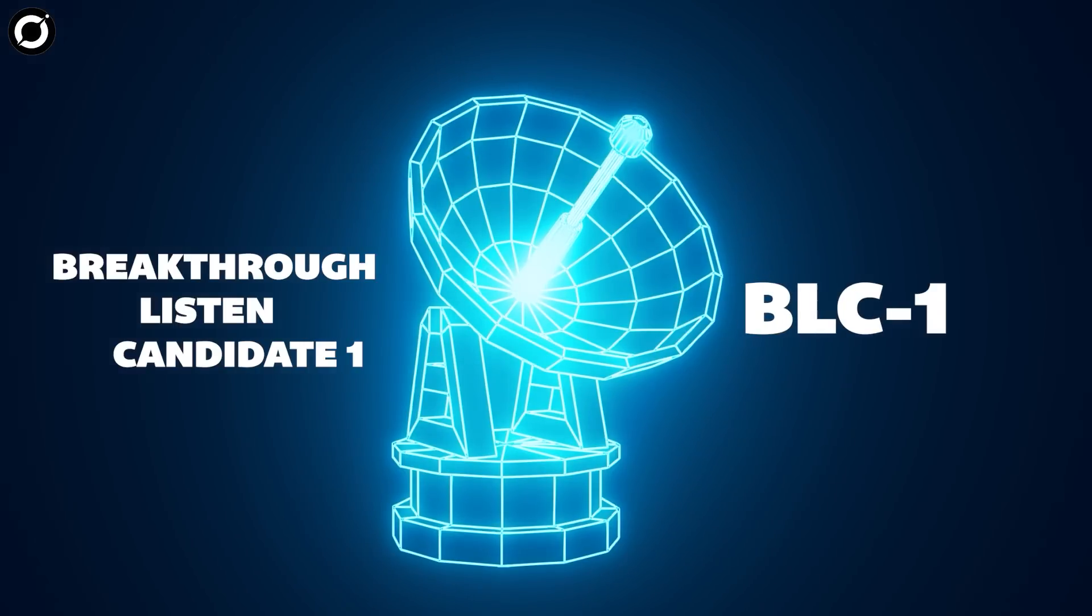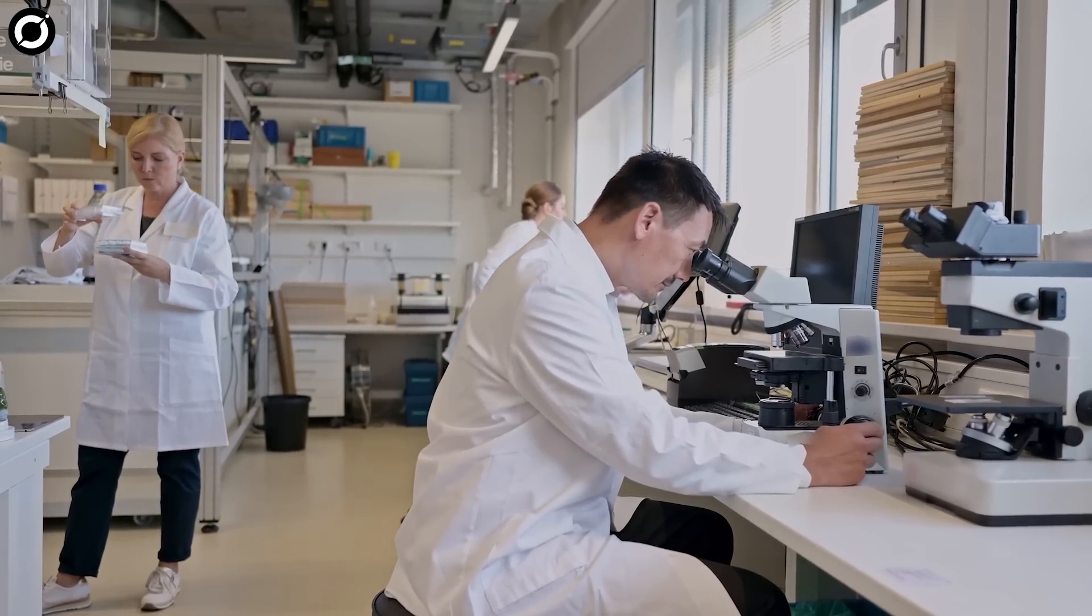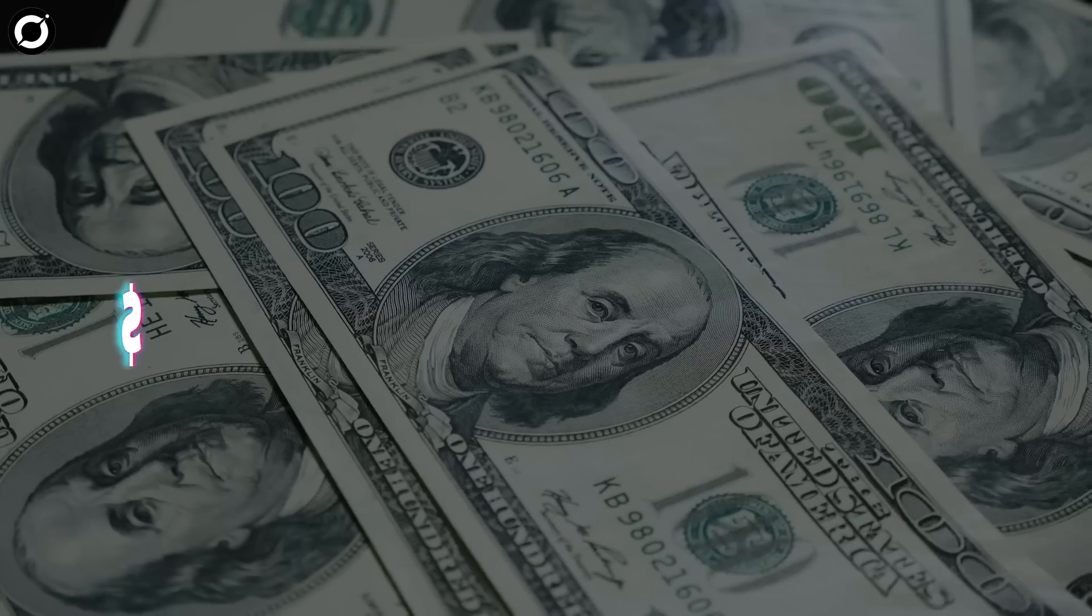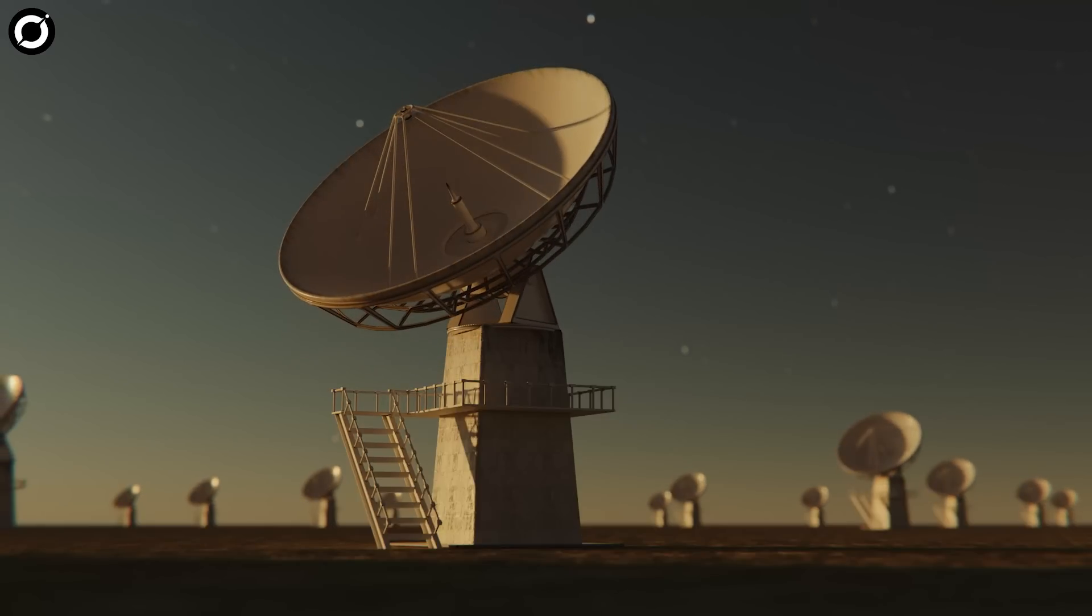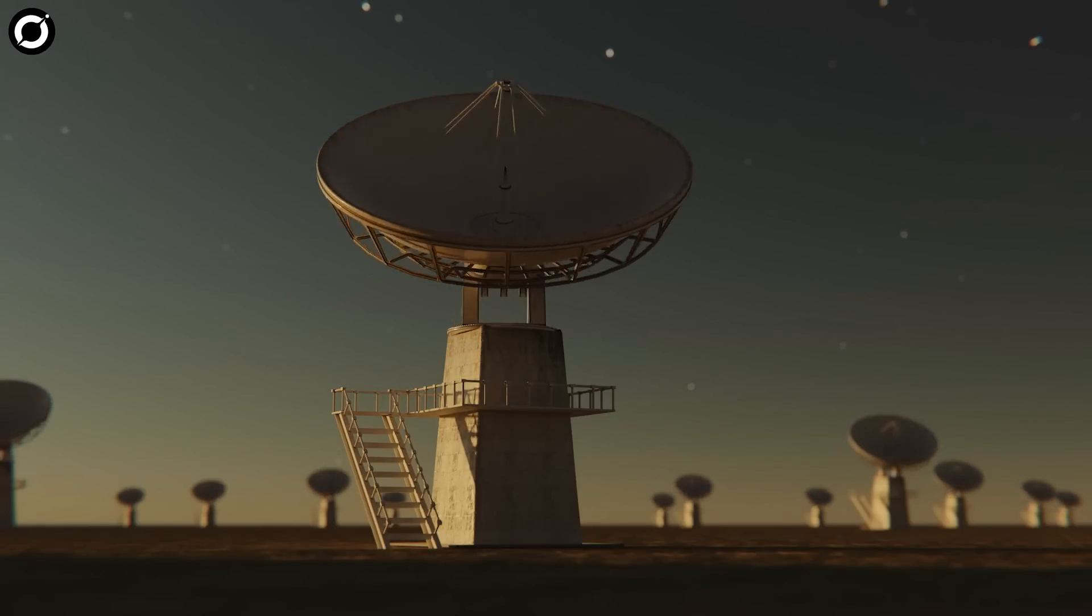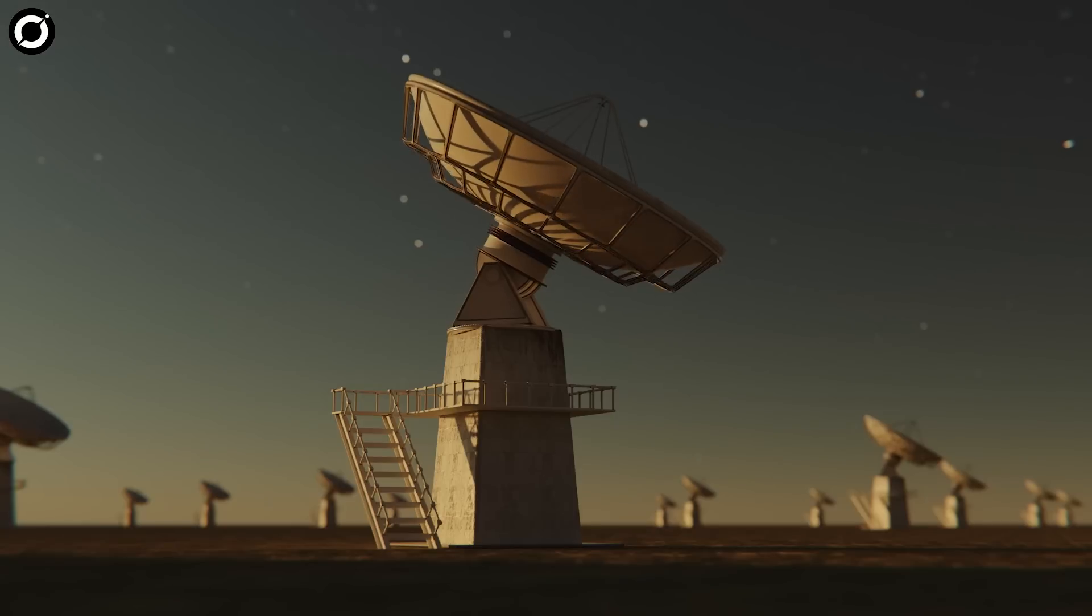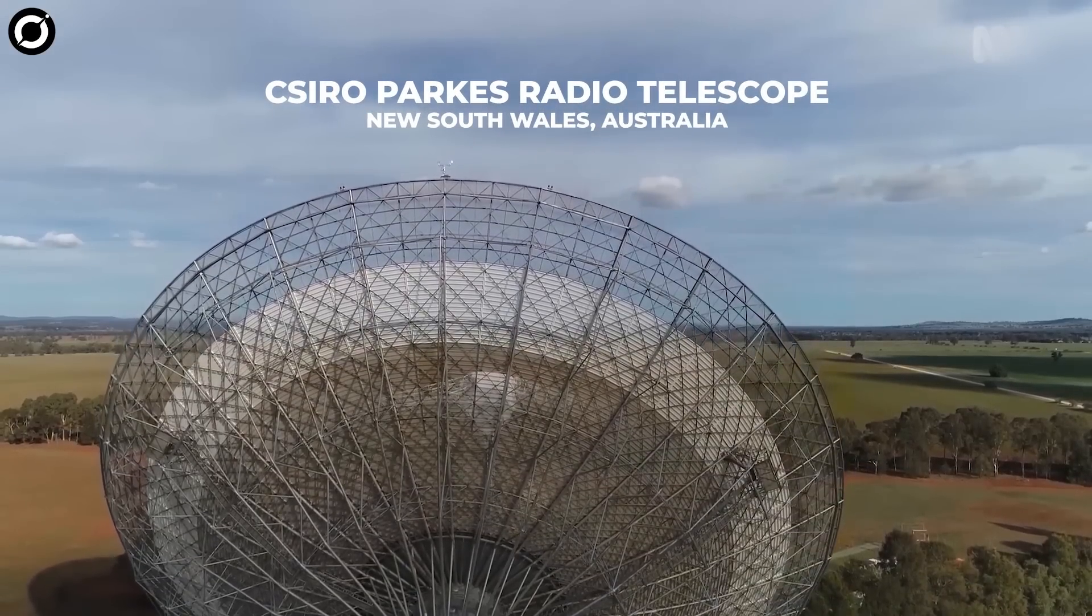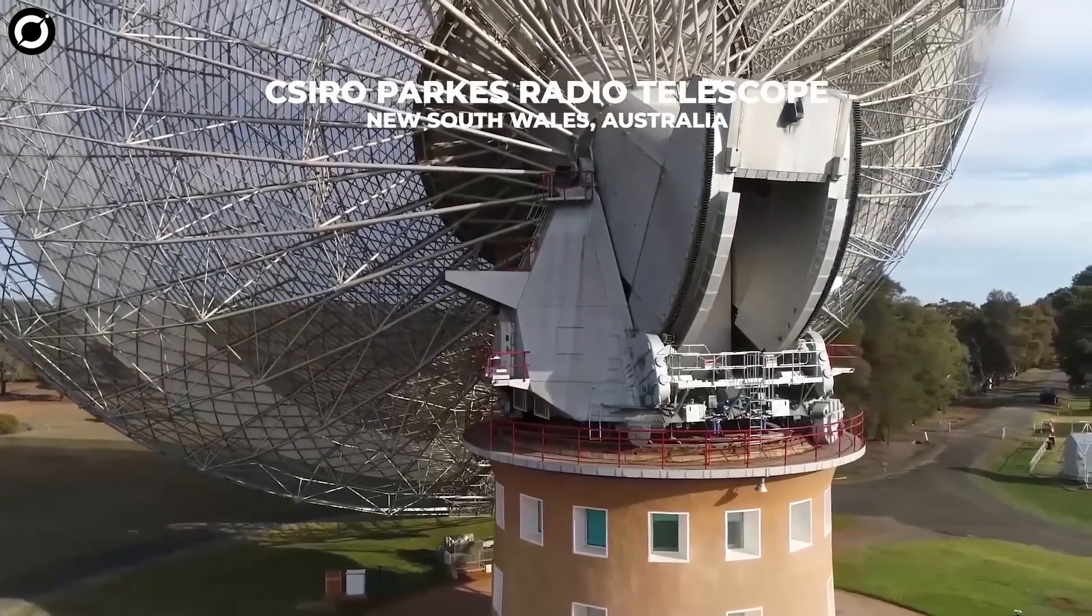Discovered by the Breakthrough Listen project, the signal has been dubbed Breakthrough Listen Candidate One, or BLC-1. The project was established to seek extraterrestrial communication in the universe by intelligent organisms. Garnering roughly 100 million dollars in financing, the project has dedicated thousands of hours of telescope observation time from around the world while using cutting-edge facilities. The signal was detected by the CSIRO Parkes radio telescope in New South Wales, Australia.